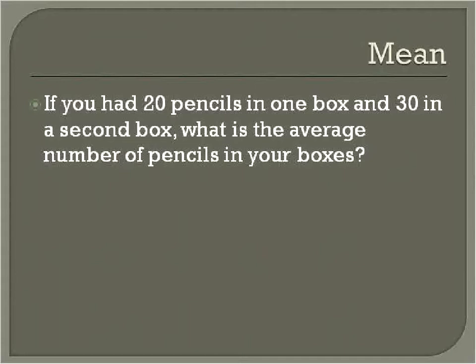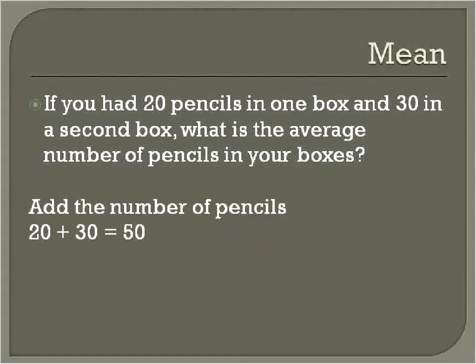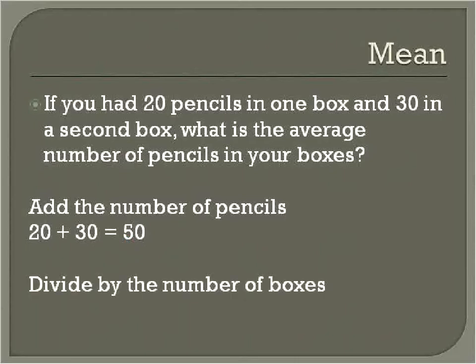If you had 20 pencils in one box and 30 pencils in the second box, what is the average number of pencils in each box? We're going to add together the number of pencils: 20 and 30 is 50. Then we divide our total by the number of boxes — 50 divided by 2 is 25. The average number of pencils per box is 25 pencils.